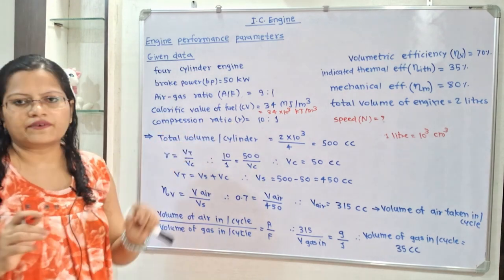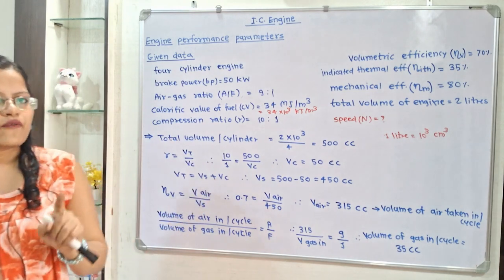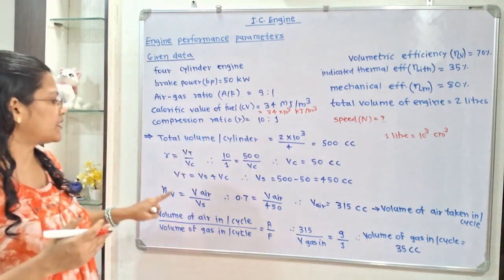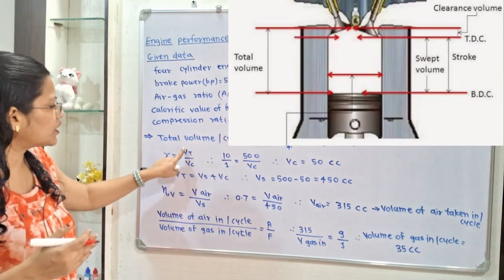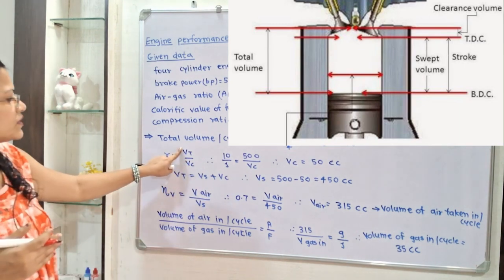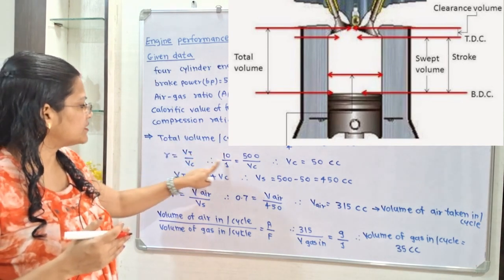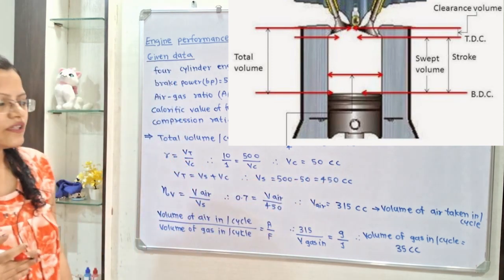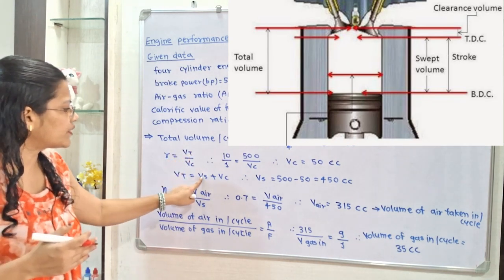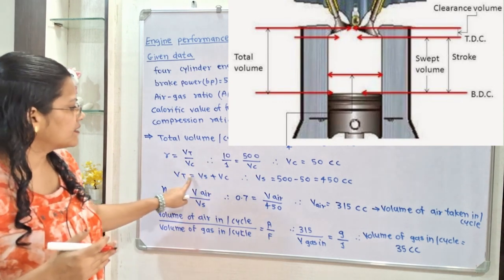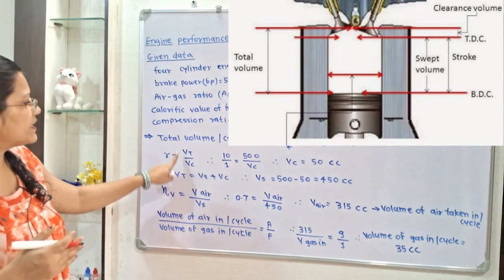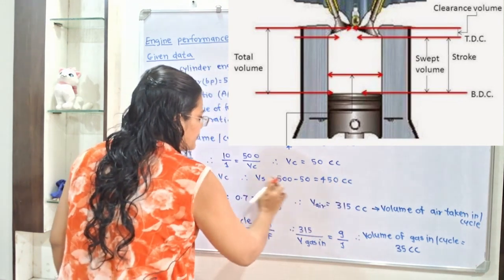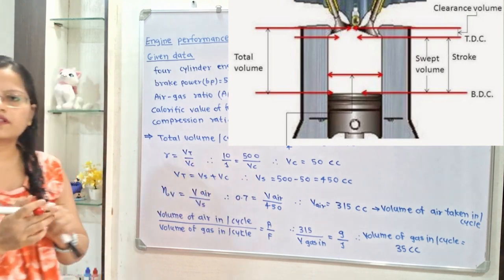Now we have the total volume per cylinder. We need to find the swept volume using the compression ratio. Compression ratio R = total volume ÷ clearance volume. Putting R = 10: 10/1 = 500 / Vc, so Vc = 50 cc. Since total volume Vt = Vs + Vc, swept volume Vs = 500 − 50 = 450 cc. This swept volume is required for further calculation.